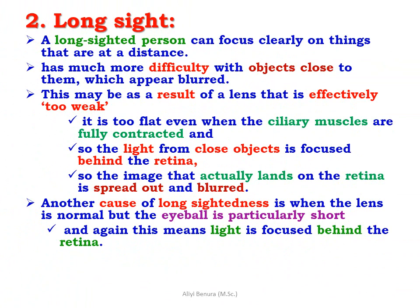A long-sighted person can focus clearly on things at a distance but has much more difficulty with close objects, which appear blurred. This may result from a lens that is effectively too weak — too flat — even when the ciliary muscles are fully contracted, so light from close objects is focused behind the retina. Another cause of long-sightedness is when the lens is normal but the eyeball is particularly short, again causing light to be focused behind the retina.